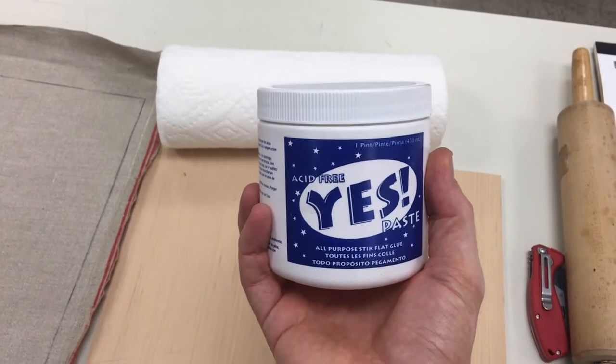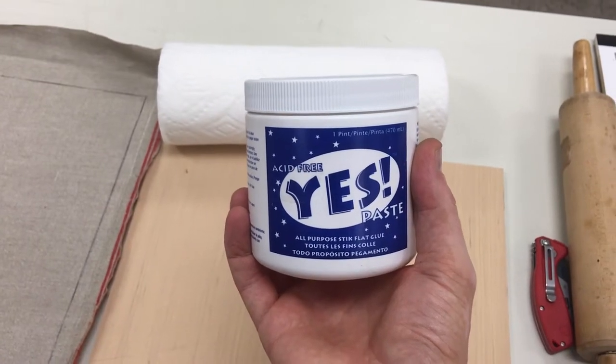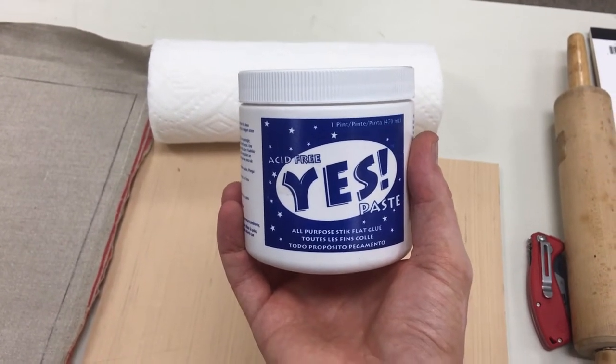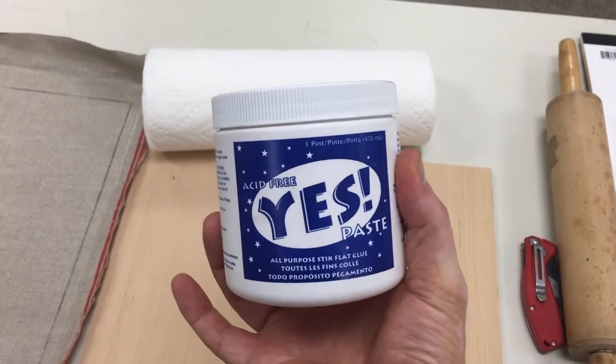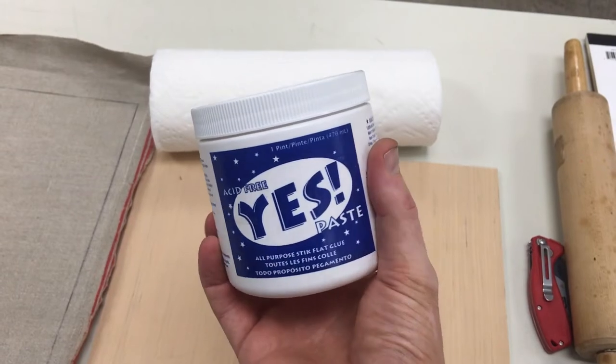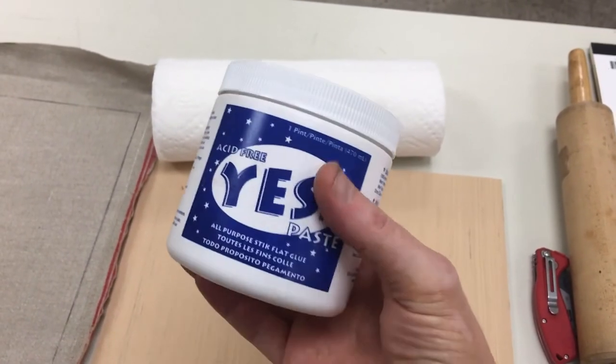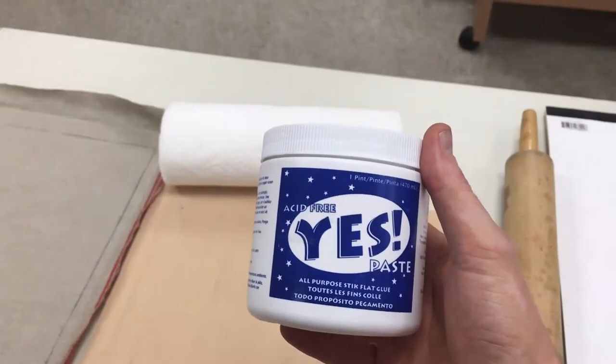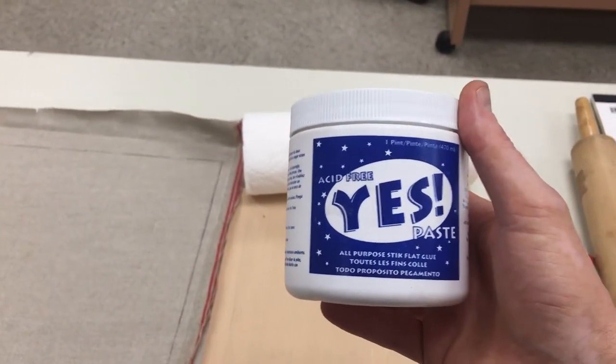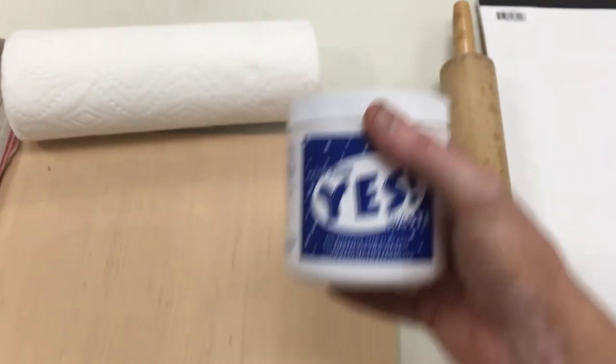So it's acid-free that's going to protect your work and it's a paste so there's not a lot of moisture in it. When I've tried to glue canvas to panels with a wet glue, there's too much moisture and the canvas ends up buckling and wrinkling but this is a nice thick dry paste. It doesn't have a lot of moisture and so it works really well for getting a flat adhesion of your canvas to your panel. This you'll have to order either from Amazon or Art Supply Company. I don't think you can find it just on the shelves anymore but it's a great product.